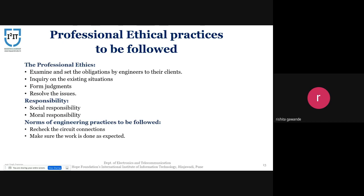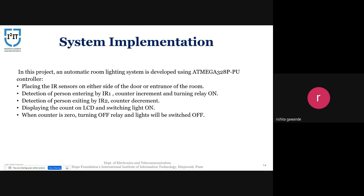Moving on to system implementation: both IR sensors must be placed on either side of the door. IR sensor 1 is outside the room and IR sensor 2 is inside. When a person enters the room, sensor 1 detects the person first and then sensor 2, indicating to the Arduino that a person is entering. Hence, it will turn on the lights and increment the visitor counter by one. If there are more visitors, the microcontroller will keep the light on and increment the visitor counter accordingly.